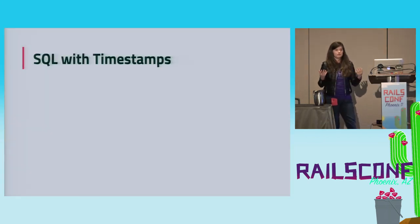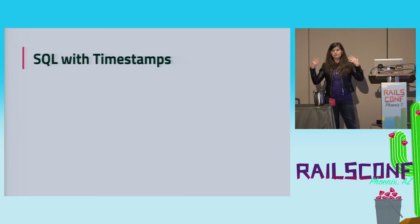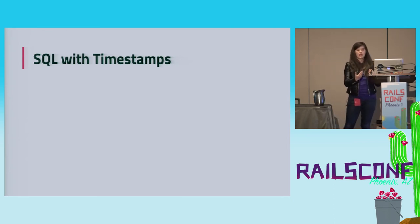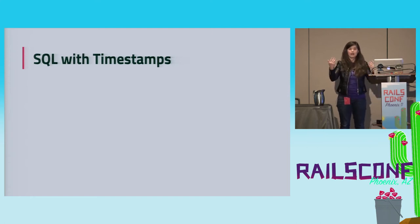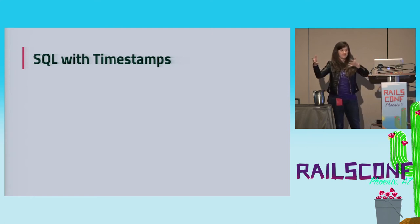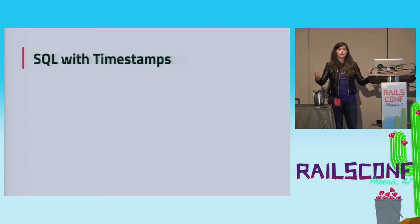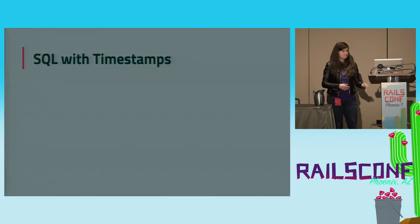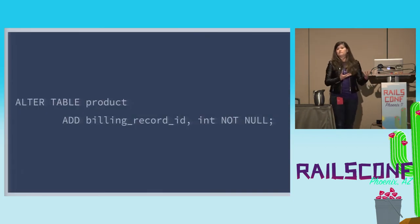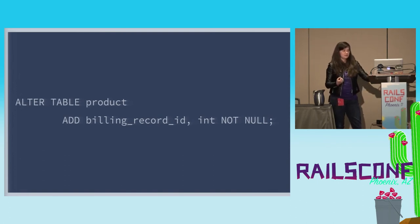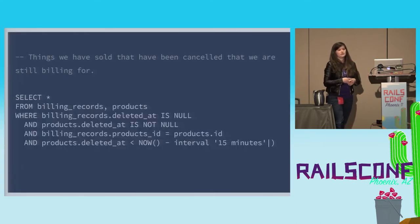How do we detect when things have gone wrong? The first thing I want to talk about is SQL with timestamps. Since we've added timestamps like deleted_at, created_at, billing_started_at, and billing_ended_at, we actually have some hope of reconciling things across a distributed system. We may never get to a perfect solution, but with a bunch of small SQL queries we can get close. Let's tackle one small aspect of this.